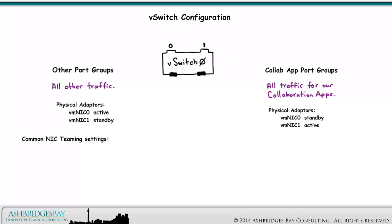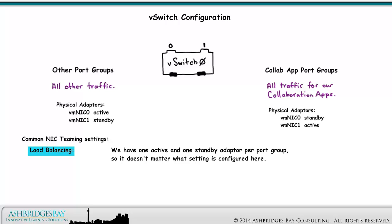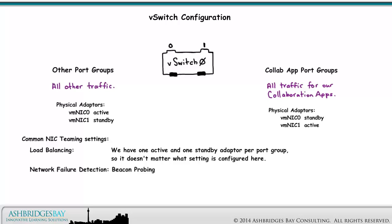Here are some common NIC teaming settings to consider. Load Balancing: we have one active and one standby adapter per port group, so this setting doesn't matter much. Network Failure Detection will be set to Beacon Probing, which sends Layer 2 Ethernet broadcasts from every VM NIC in the vSwitch on every VLAN. All other VM NICs with the same VLAN defined will receive the broadcast frames. If three consecutive beacon packets have not been received, the VM NIC is considered down and failover is triggered. Notify Switches will be set to Yes — if a VM moves to a different uplink, a RARP is sent to update northbound switch/bridge forwarding tables. Failback is set to No to prevent automatic reversion to a flapping link. We've decided on No because Cisco Advanced Services recommends this for megacluster deployments. Remember, setting this to No means you need to manually fail back after a network problem is resolved.